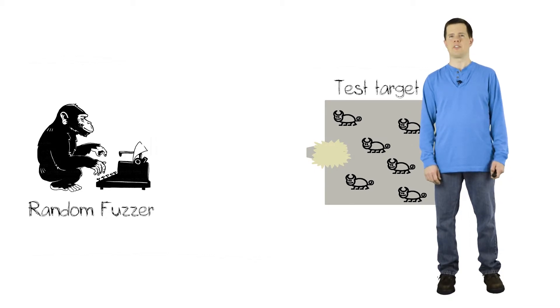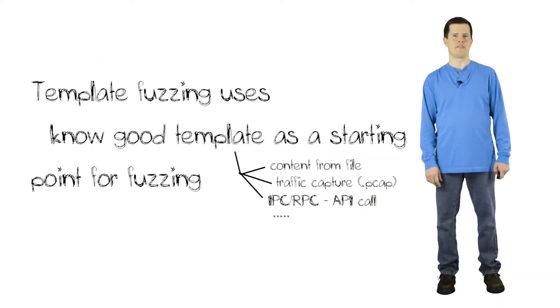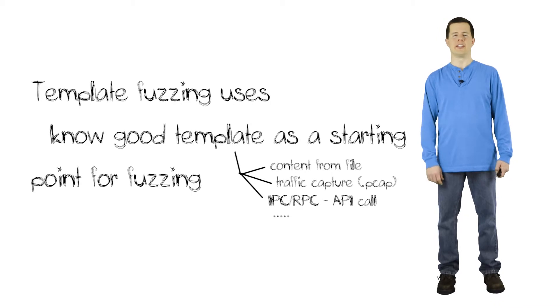The next step up from random fuzzing is called template fuzzing, sometimes called mutational fuzzing as well. What you do here is you get a recording of a successful conversation. If it's a network protocol, you use Wireshark or something like that, and you get a recording. And to do the fuzzing, you replay the recording over and over and over again.